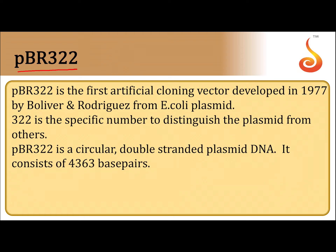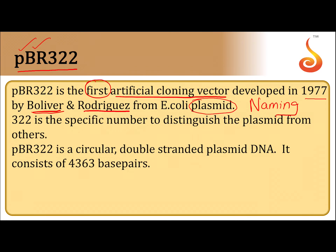pBR322 is the first artificial cloning vector, developed in the year 1977 by Bolivar and Rodriguez from E. coli plasmid. Naming: 'p' stands for plasmid, 'B' for Bolivar, 'r' for Rodriguez, and 322 is the specific number to distinguish this plasmid from others. pBR322 is a circular, double-stranded plasmid consisting of 4363 base pairs.